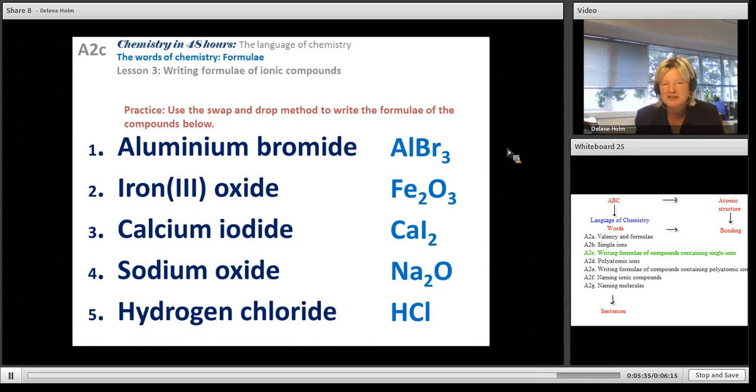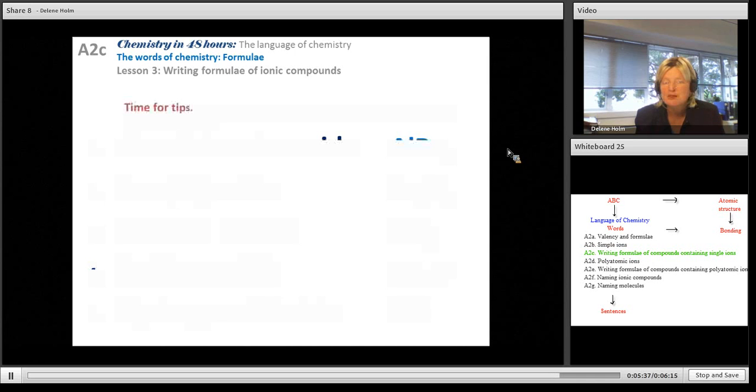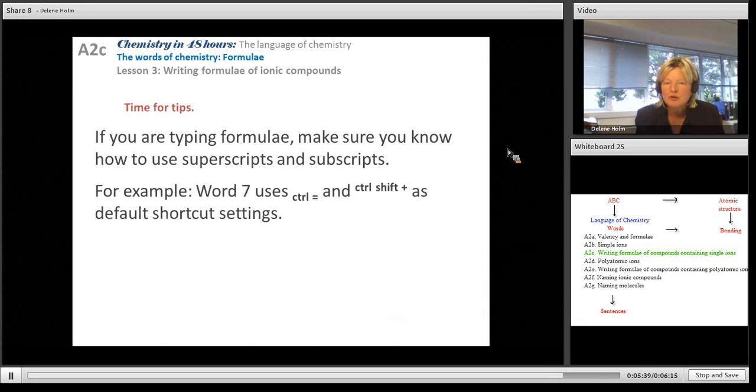Finally, time for tips. If you're typing formulae, make sure you use the superscripts for the charges and the subscripts for the ratios. That's really important. If you don't, it's wrong. For example, Word 7, a program I use. If you use CTRL equals, it will drop it down to a subscript. And CTRL shift equals or CTRL plus will make it go as a superscript.